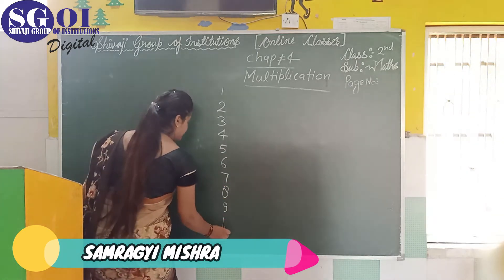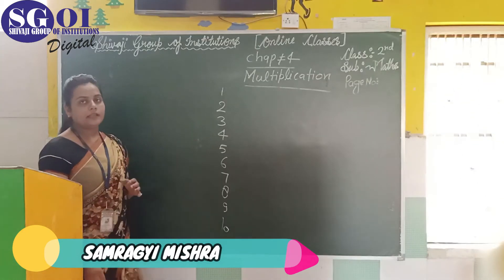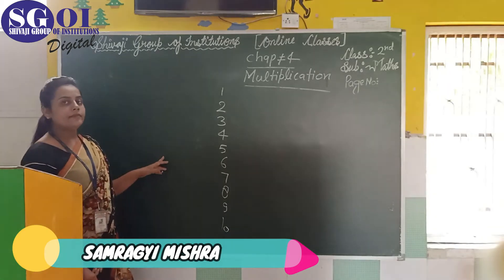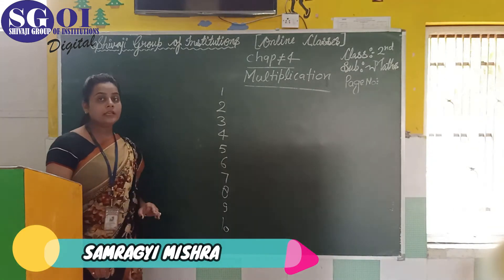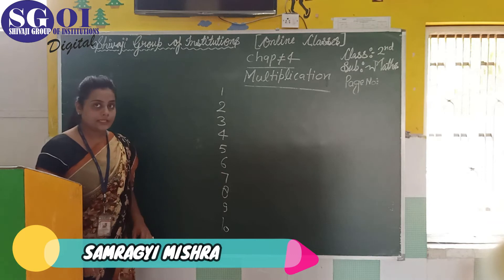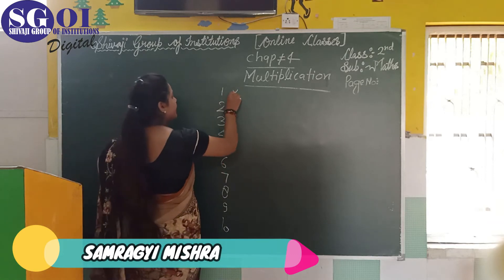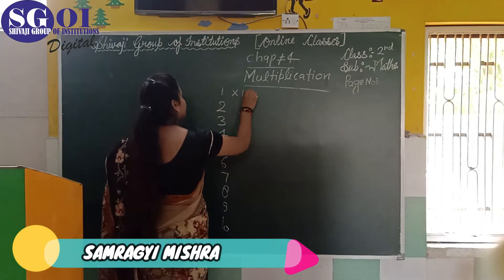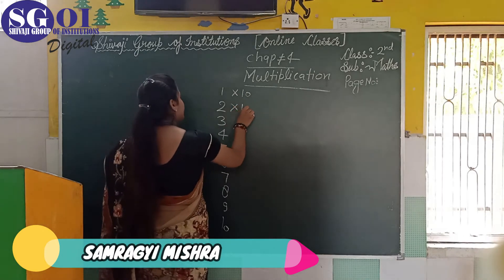If you remember, in the last exercise number 11, you had 10 dots in each box. Now, there were 10 dots in each box.